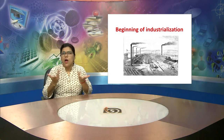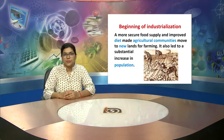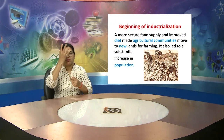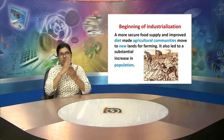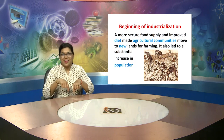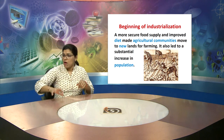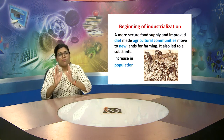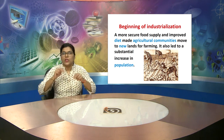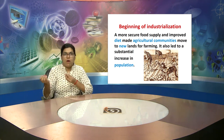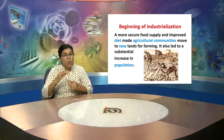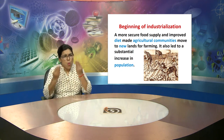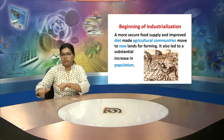Now we will be talking about the beginning of industrialization. A more secure food supply and improved diet made agricultural communities move to new land for farming. Because the population was increasing, there was demand for more food and more resources for those people. New lands were getting discovered for farming, and slowly this led to a substantial increase in the population.